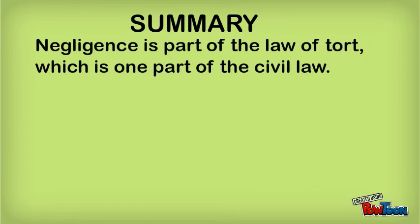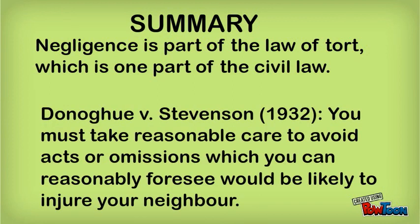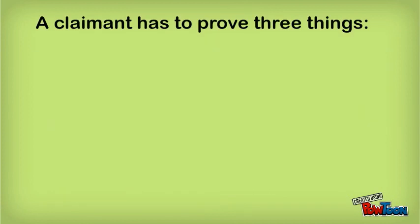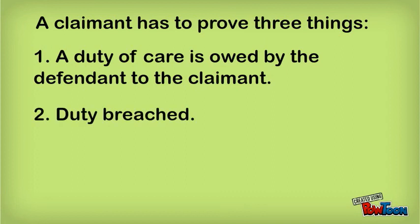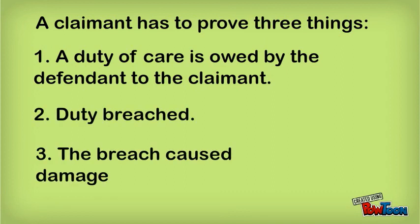To sum up: negligence is part of the law of tort, which is one part of the civil law. The starting point for negligence is the neighbour test in Donoghue v Stevenson — you must take reasonable care to avoid acts or omissions which you can reasonably foresee would be likely to injure your neighbour. To prove liability in negligence, the claimant has to prove three things: firstly, that a duty of care was owed by the defendant to the claimant; secondly, that this duty had in fact been breached; and thirdly, that the breach caused damage — the loss suffered needs to have been caused by the defendant's carelessness.